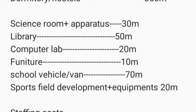A computer lab will cost around 20 million. Right now, given digital development and online learning, it's good that each school has at least a computer lab. Desktop computers are not so expensive — you can get average older ones at around 1 million each. Furniture for the whole school can cost roughly 10 million.